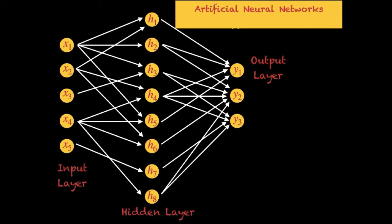ANNs connect the input and the output through what are called hidden layers. In the ANN you see on your screen, there is one input layer, one output layer, and one hidden layer. An ANN can have many different hidden layers — 2, 3, 4, 10, 20 — however there must be at least some hidden layers. Your input parameters are in the first layer, and information passes through the neural network with mathematical calculations happening as data flows from left to right, finally reaching the output layer.